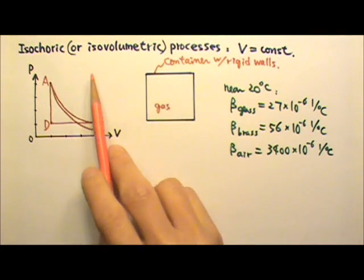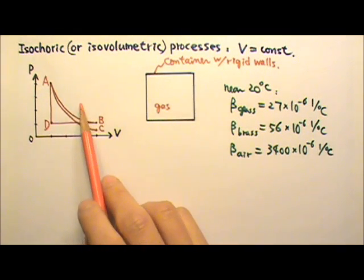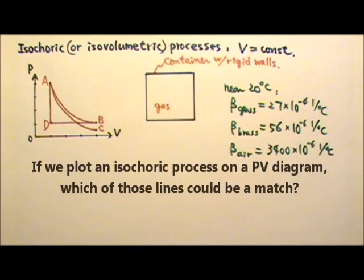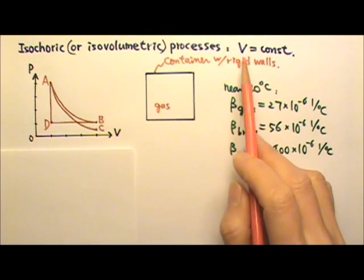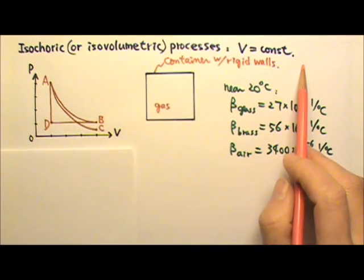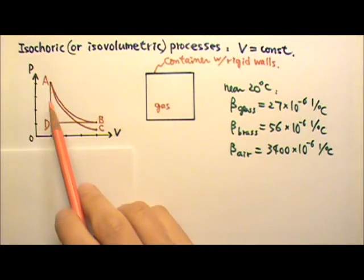If we plot an isochoric process on a PV diagram, which of those lines could be a match? Since the volume has to stay a constant, it must be a vertical line, either A to D or D to A.